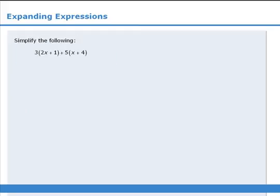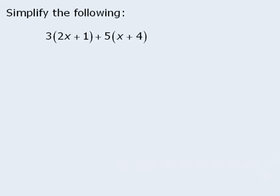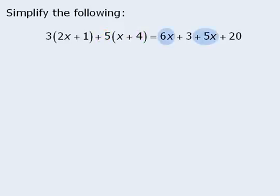Now let's use what we have learned to simplify some expressions. First we'll expand the products: 3 times 2x gives 6x, and 3 times positive 1 gives plus 3. Then positive 5 times positive x gives plus 5x, and positive 5 times positive 4 gives plus 20. We can then simplify by combining like terms: 6x and 5x give 11x, and 3 and 20 give 23.